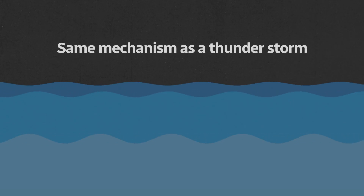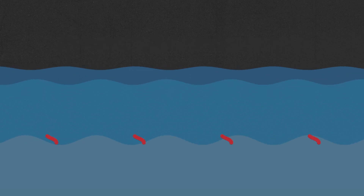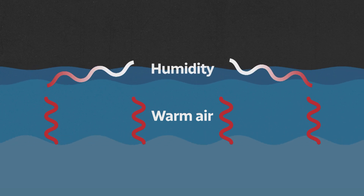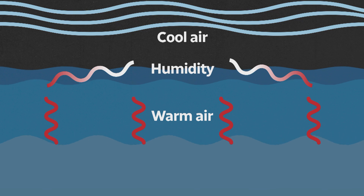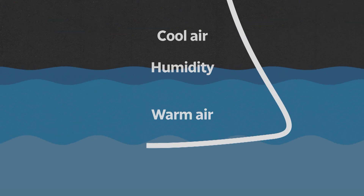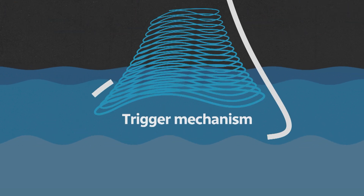Essentially it's the same mechanism as for a thunderstorm, which is essentially instability. So you need warm and humid air near the surface, cool air aloft, then increasing winds with height — we call it wind shear — and then a trigger mechanism like a front, for example.